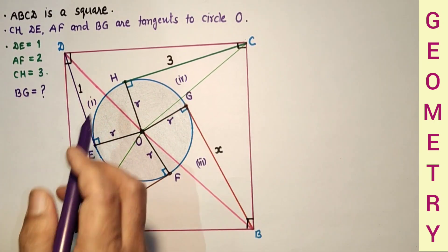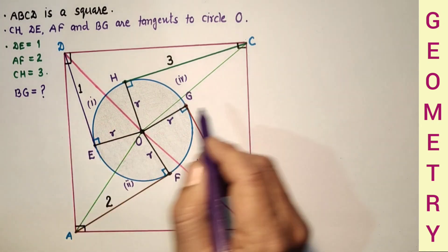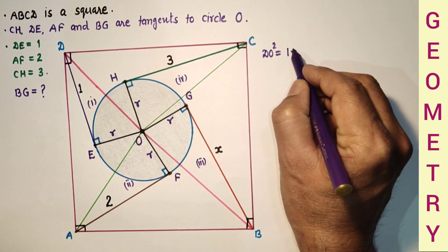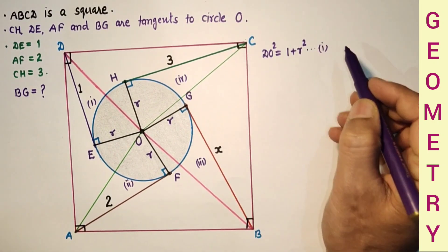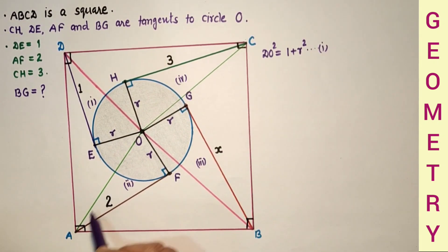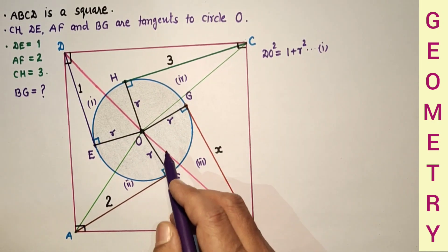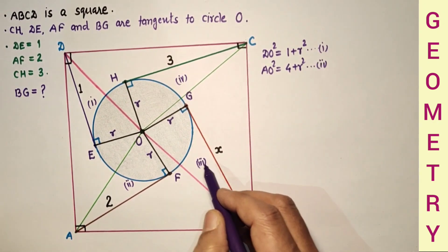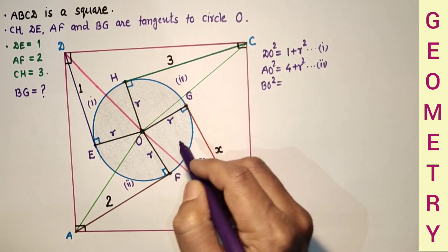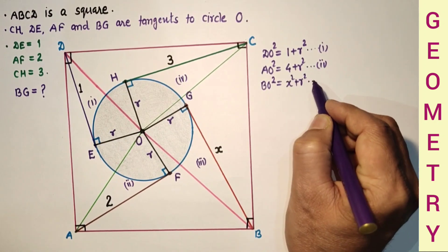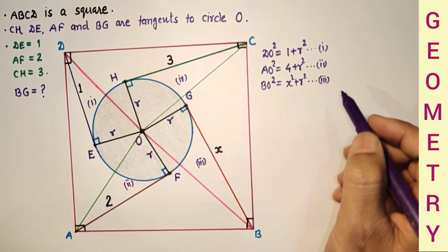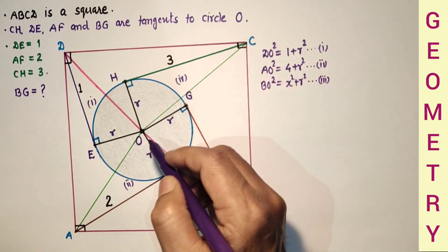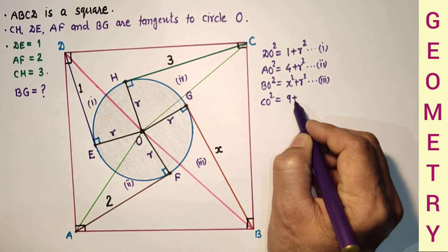Using the Pythagorean theorem on triangle 1: DO² = 1² + R². From triangle 2: AO² = 2² + R² = 4 + R². From triangle 3: BO² = X² + R². And from right triangle 4: CO² = 3² + R² = 9 + R².